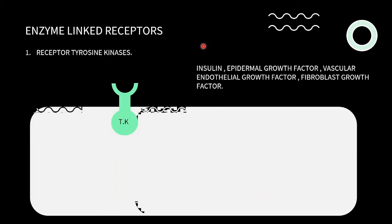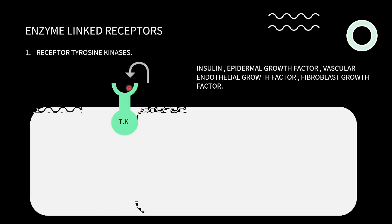Next, we have enzyme-linked receptors. These are also present on the cell membrane and are single-pass receptors. There are usually five types, starting with receptor tyrosine kinase. This type of receptor has two domains: the extracellular domain, where the ligand attaches, and the intracellular domain, which contains an enzyme — in this case, tyrosine kinase. Whenever the ligand binds to the extracellular domain, the receptor gets activated.